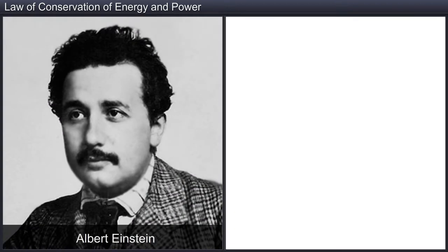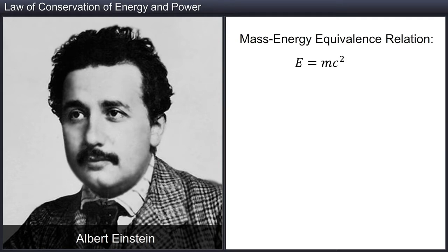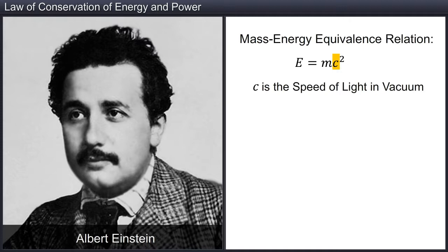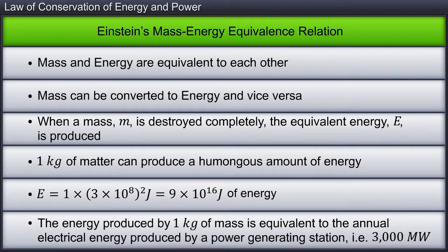However, Albert Einstein proposed his famous mass-energy equivalence relation E = mc², to show that mass and energy are equivalent. Here, c is the speed of light in vacuum, which is approximately 3 × 10⁸ meters per second. Thus, according to Einstein's mass-energy equivalence relation, mass and energy are equivalent to each other — mass can be converted into energy and vice versa.